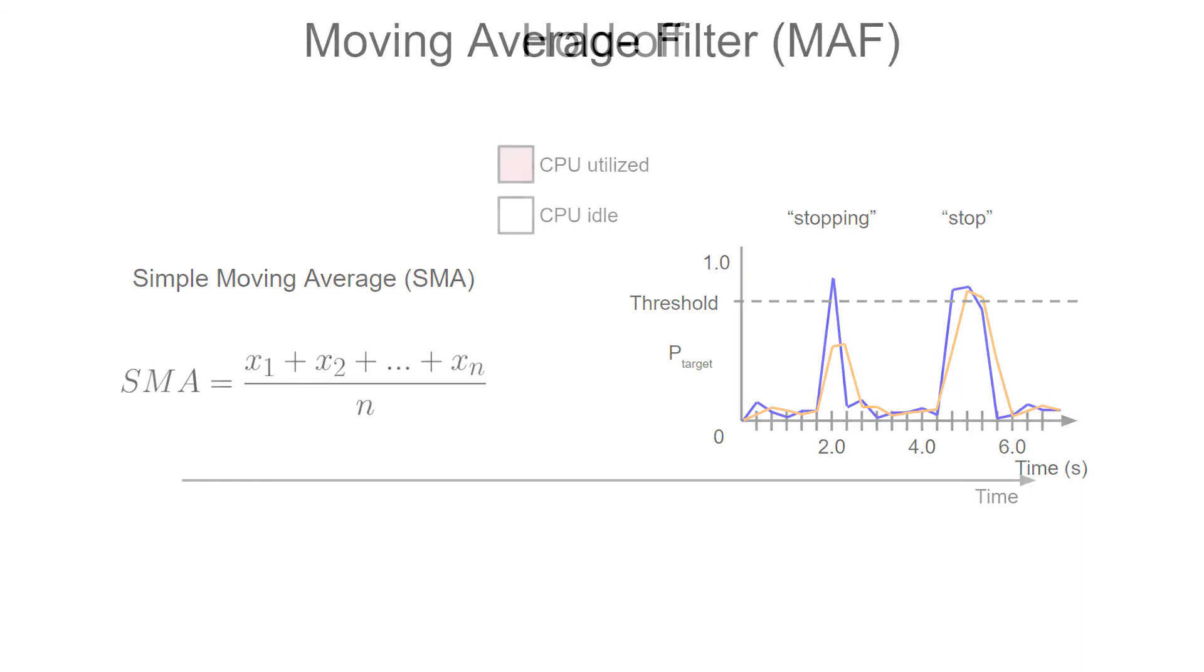Another technique that you might be able to use is hold-off. This is where you stop performing inference for a while after your threshold condition has been met. If we plot our CPU utilization time for our keyword spotting system, it will look something like this. The CPU is used for about 135 milliseconds out of every 333 milliseconds for feature extraction and inference. That leaves only about 198 milliseconds left to perform other actions.